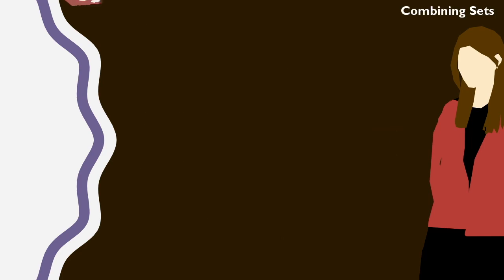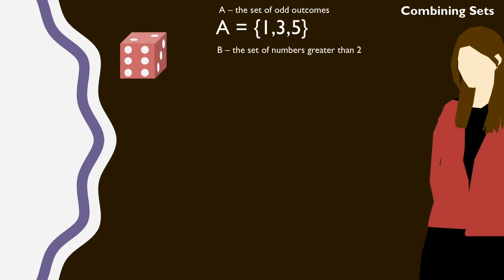So the set of odd outcomes when we roll one die is the set of 1, 3, and 5, and the set of numbers greater than 2 is the set 3, 4, 5, and 6.